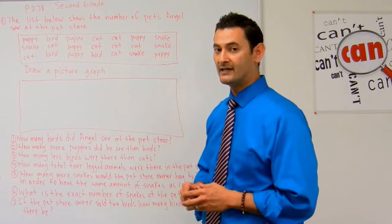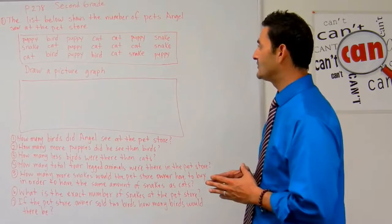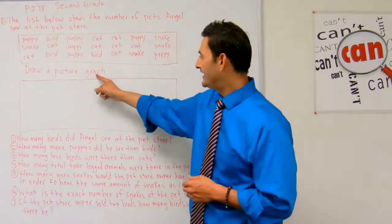This reads: the list below shows the number of pets Angel saw at the pet store. So here it has all the pets that he saw at the pet store. Then it says draw a picture graph, so what I'm going to do is go ahead and draw a picture graph.